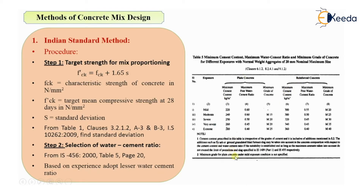From IS456-2000 Table 5: for mild exposure, maximum free water cement ratio for plain cement concrete is 0.60 and for RCC it is 0.55. For moderate exposure for RCC it is 0.50, for severe it is 0.45, for very severe it is 0.45, and for extreme condition it is 0.40. The IS code also gives minimum grades of concrete: for mild exposure M20, and for extreme condition M40 for RCC structures.